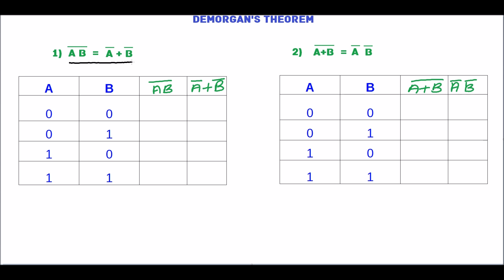For A=0, B=0: AB is 0, and 0 complement is 1. For A=0, B=0: A complement is 1 and B complement is 1, so 1 plus 1 equals 1.